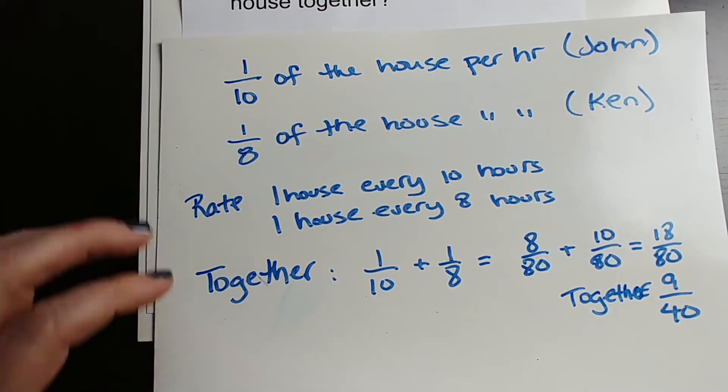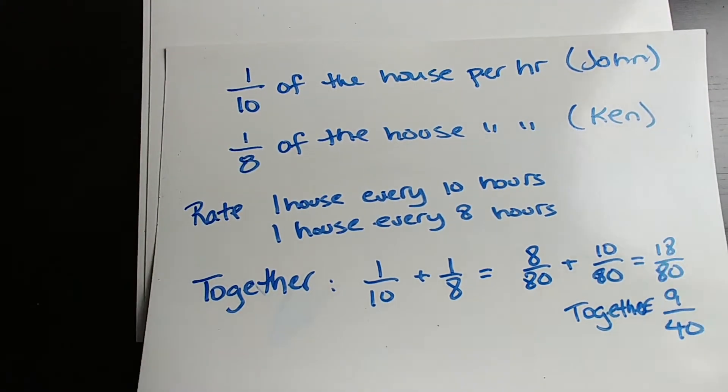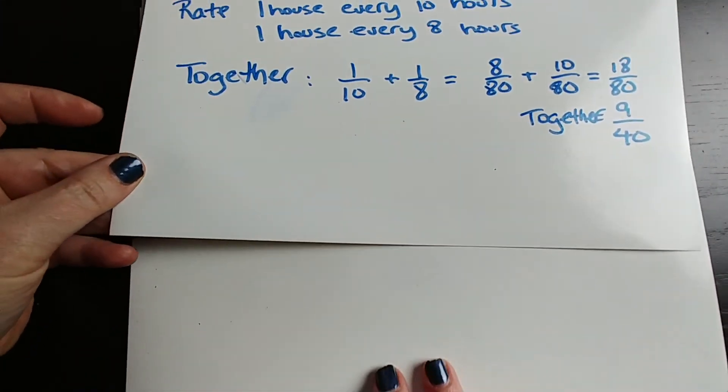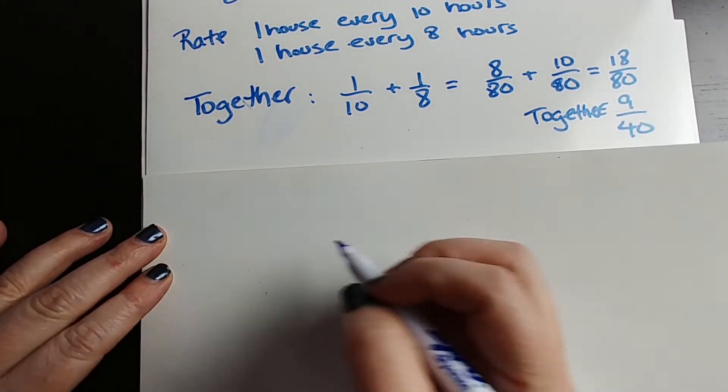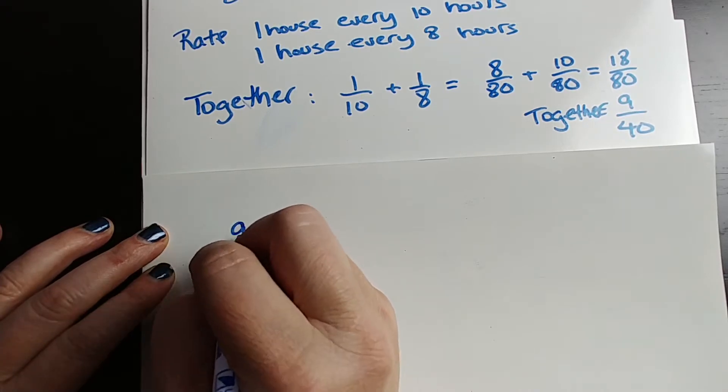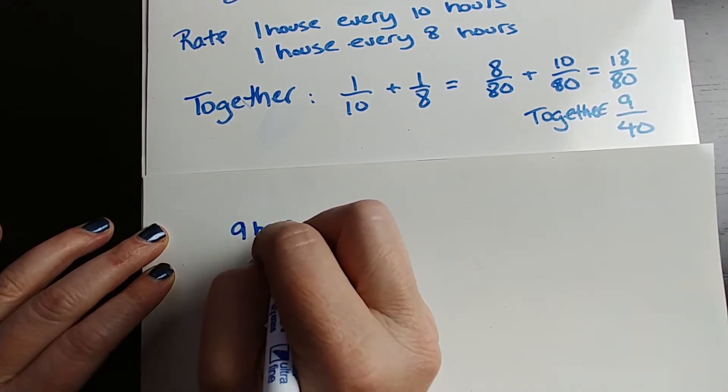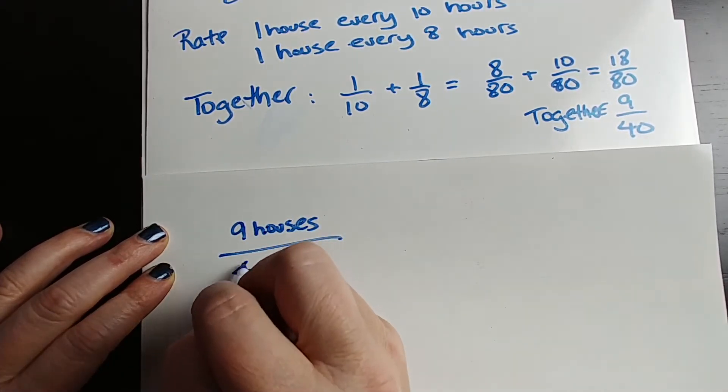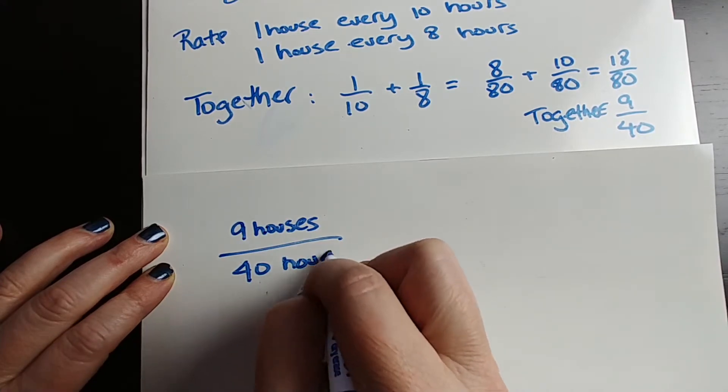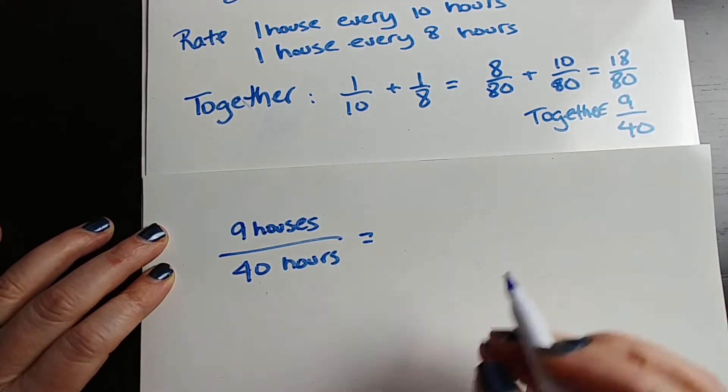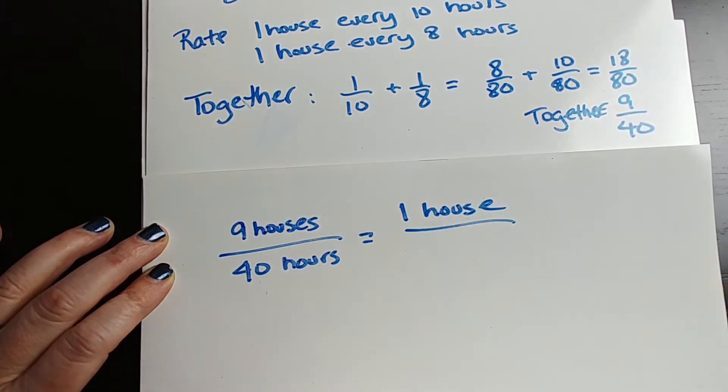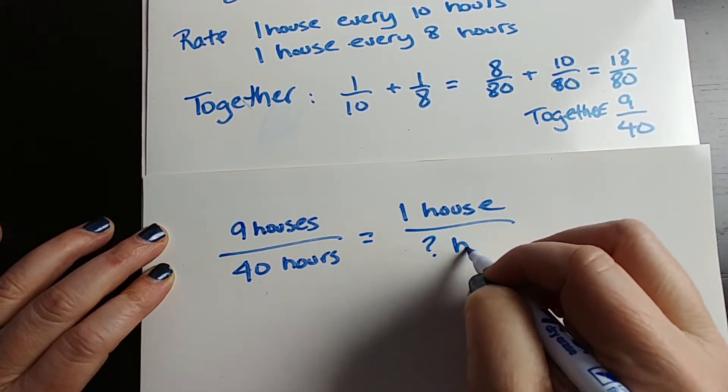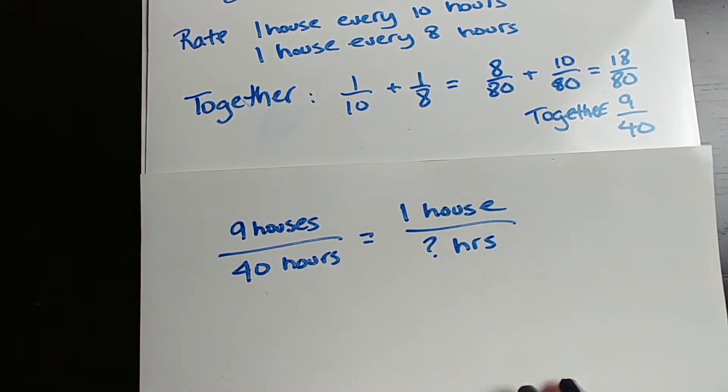So together, 9 40ths. So how do we turn this into the answer? It's actually quite easy. So if we know that together they can do 9 houses every 40 hours, I want to know how long for 1 house. So 1 house, question mark hours. That's it. That's all we have to do.